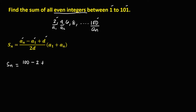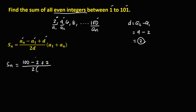The common difference is the distance between two consecutive terms, found as a sub 2 minus a sub 1. Since a sub 2 is 4 and a sub 1 is 2, the common difference is positive 2.